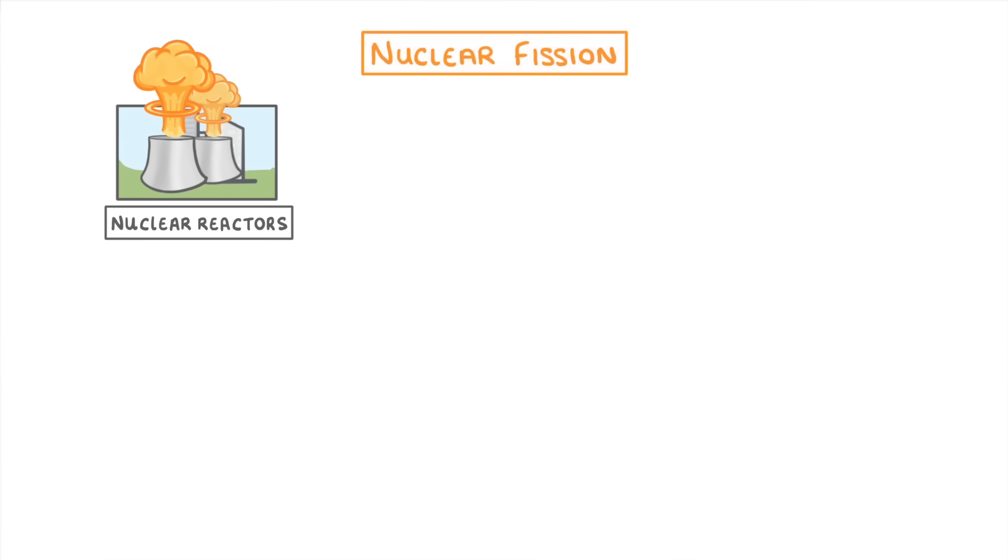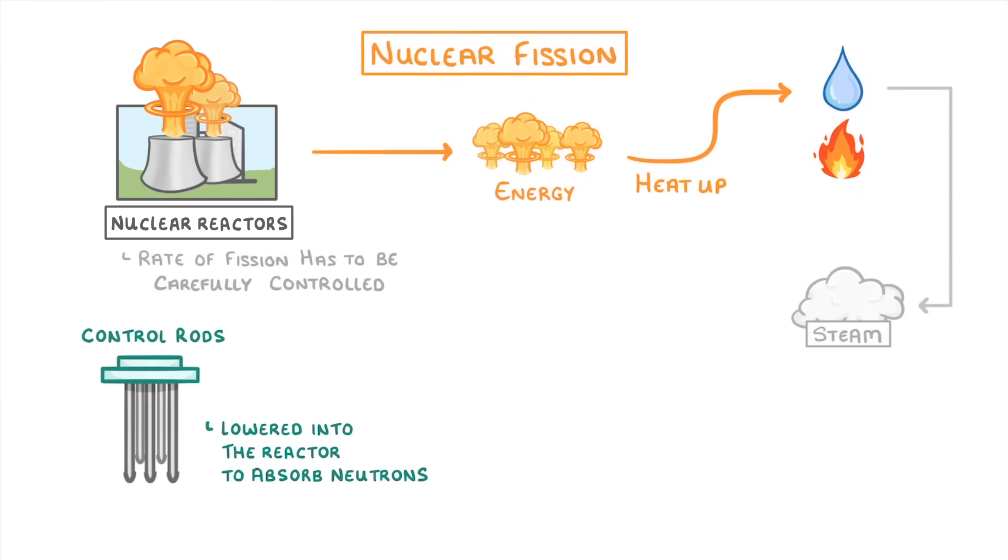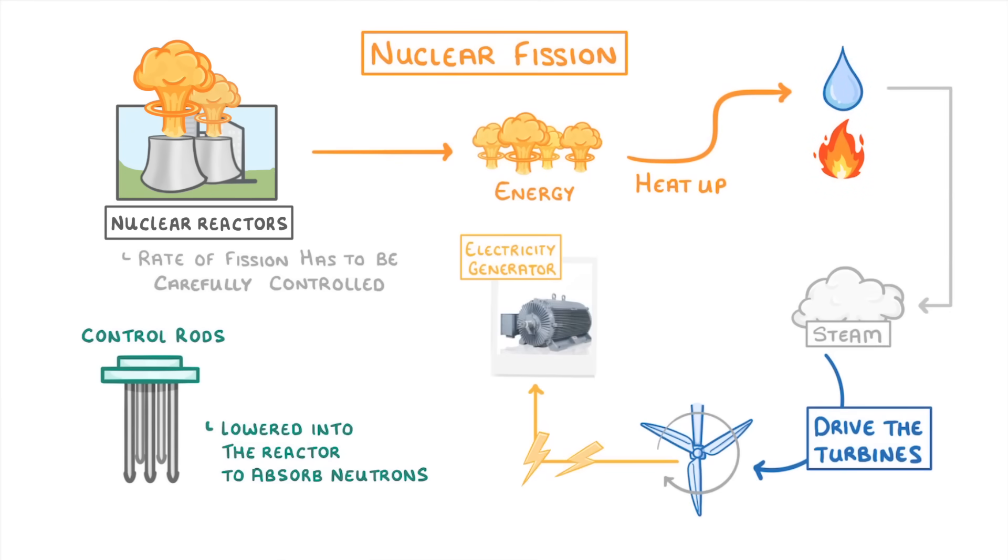In nuclear reactors though, the rate of fission has to be carefully controlled, to stop it from getting out of control. This is mainly achieved by control rods, which can be lowered into the reactor to absorb neutrons, and so slow down the reaction. Meanwhile, the energy released from the process is used to heat up water, and turn it into steam, which can then drive turbines that are connected to an electricity generator.